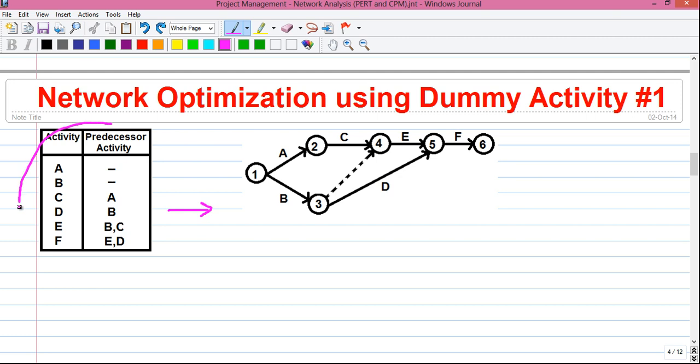Here you are given a table of activities and the predecessor activities. The predecessor activity is an activity which must be finished before the actual activity can start. For example, here the activity A must be completed before the activity C can start. So how to draw the network using this table? I will tell you.